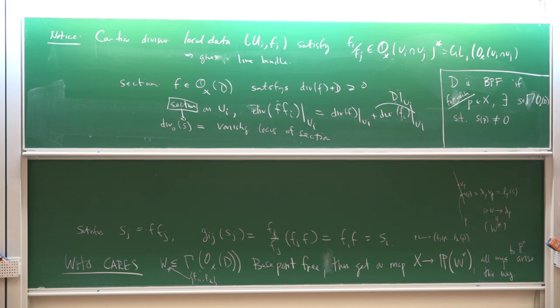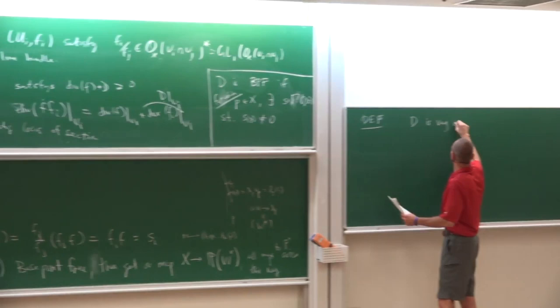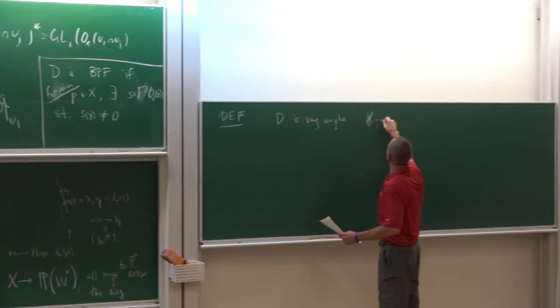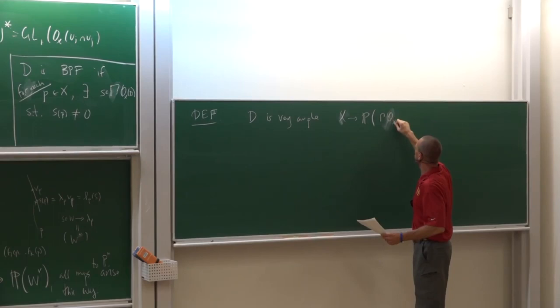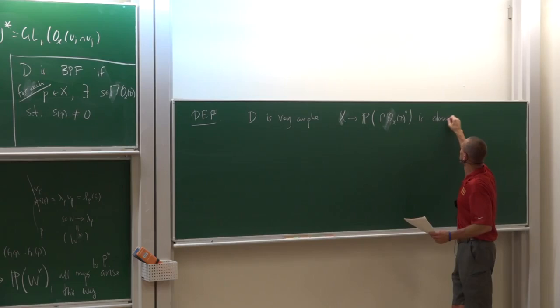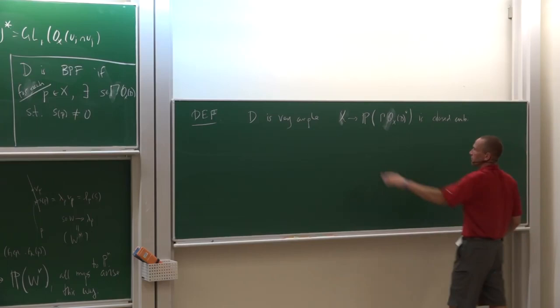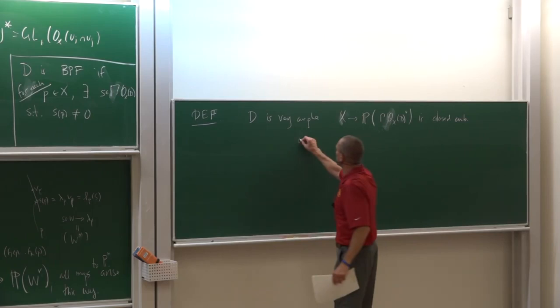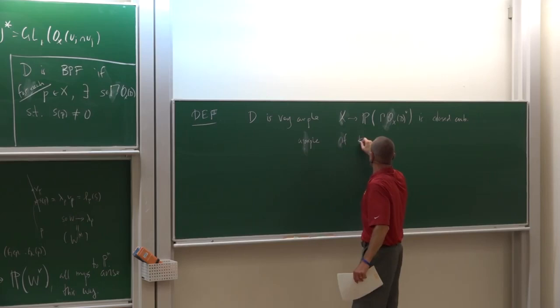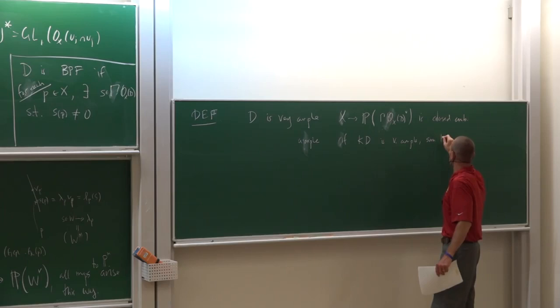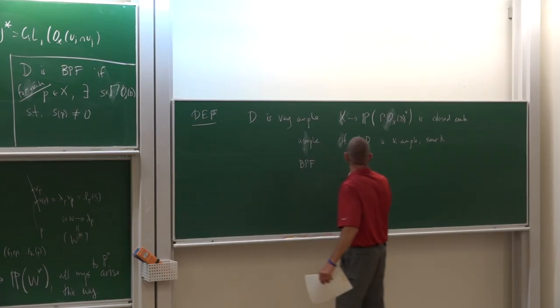Definitions: A divisor D is very ample exactly when the map from X to P(Gamma(X, D)^dual) is a closed embedding. A divisor is ample if some power kD is very ample for some k. And base-point-free if the corresponding map is base-point-free, which we've already defined.